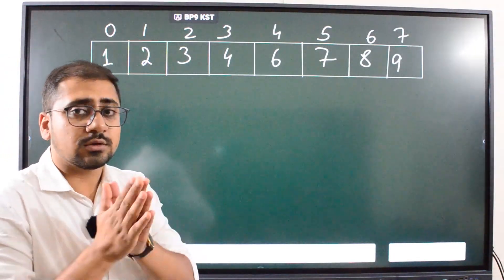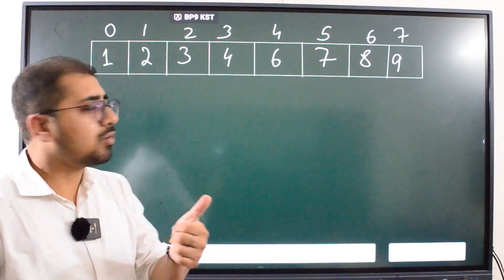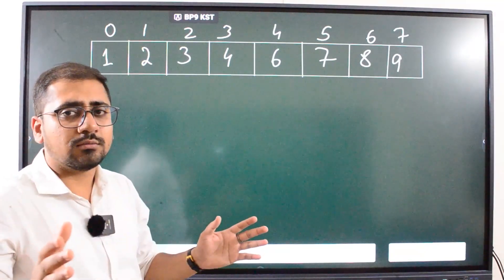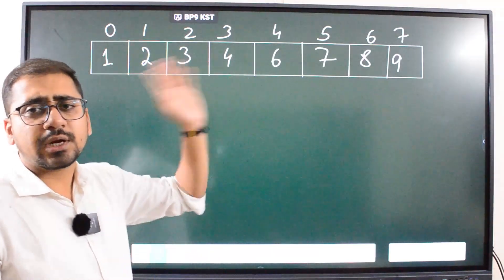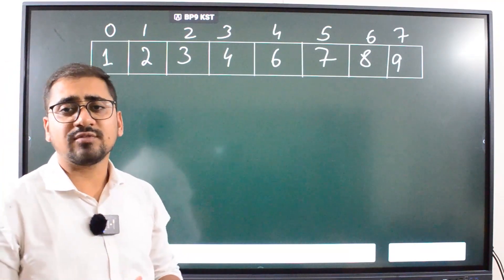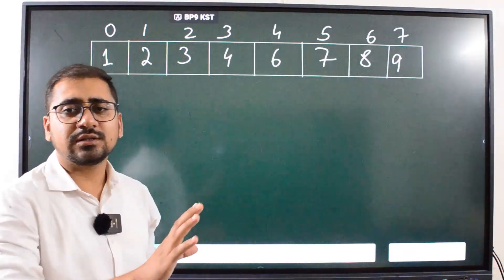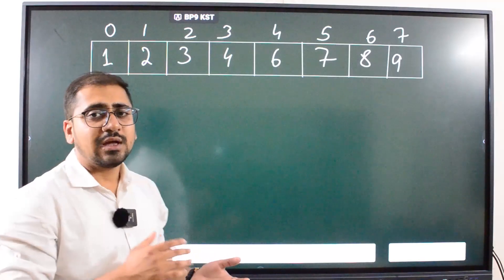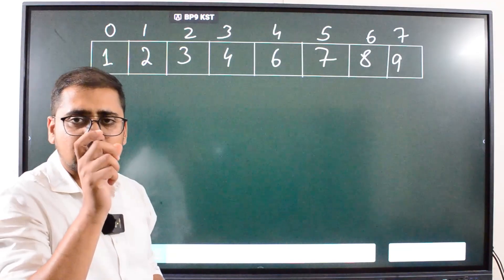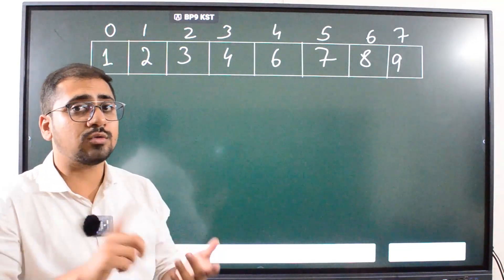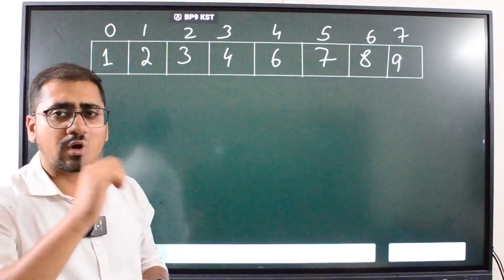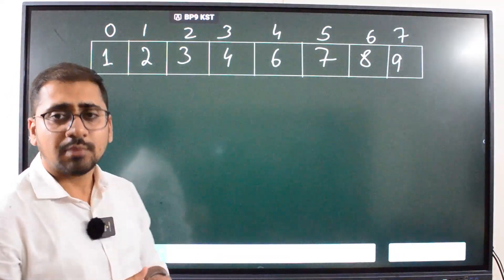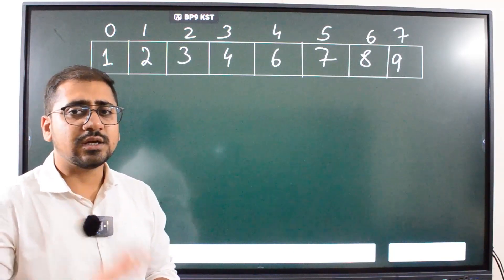Now why are we using binary search? Because it takes O(log n) time complexity. There are different methods: first, linear search taking O(n); second, find the sum of all numbers from 1 to n and subtract all array elements — the result is 5; third, XOR of all numbers from 1 to n, then XOR with all array elements gives 5. All three methods take O(n), but binary search takes O(log n).